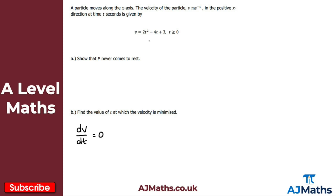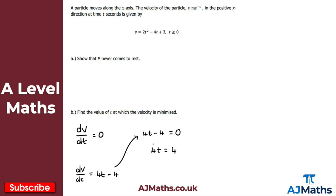Differentiating v equals 2t² minus 4t plus 3: dv/dt equals 4t minus 4. Setting dv/dt equal to zero: 4t minus 4 equals zero. Adding 4 to both sides gives 4t equals 4, and dividing by 4 gives t equals 1. So the value of t at which the velocity is minimized is t equals 1 — after one second the velocity is minimized.